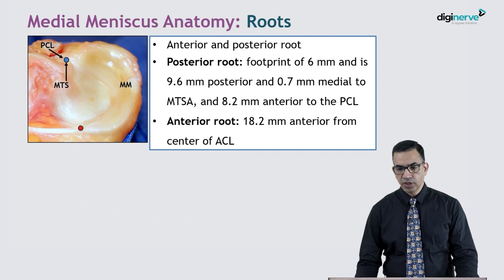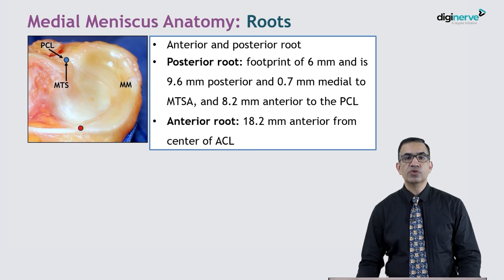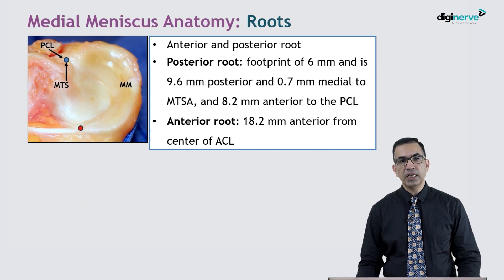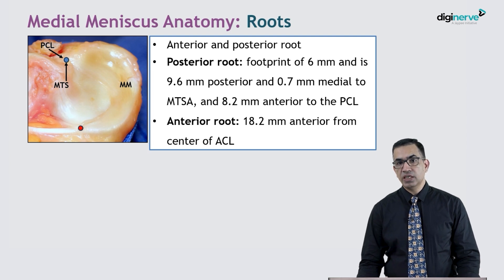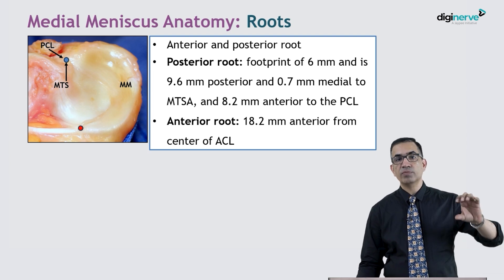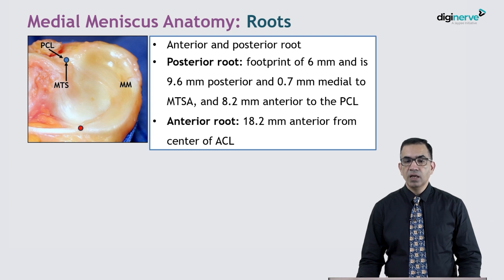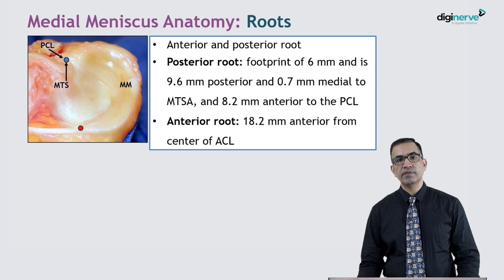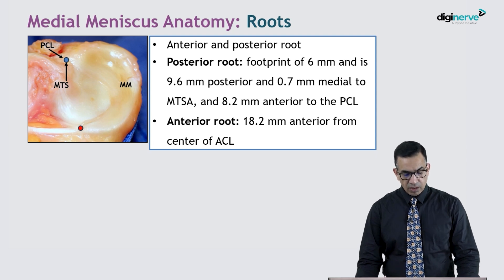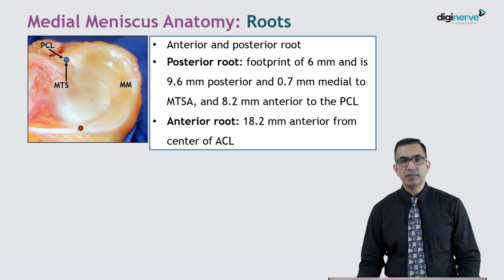In the last decade or so, medial meniscus root tears have been diagnosed increasingly. They are found more commonly in middle-aged women, especially in their 40s to early 50s, who suddenly present with knee pain that is acute in onset — starting after getting up from a squatting position, trying to climb a bus, or coming downstairs. This pain is usually located posteriorly and is relentless, not subsiding with conservative medication.